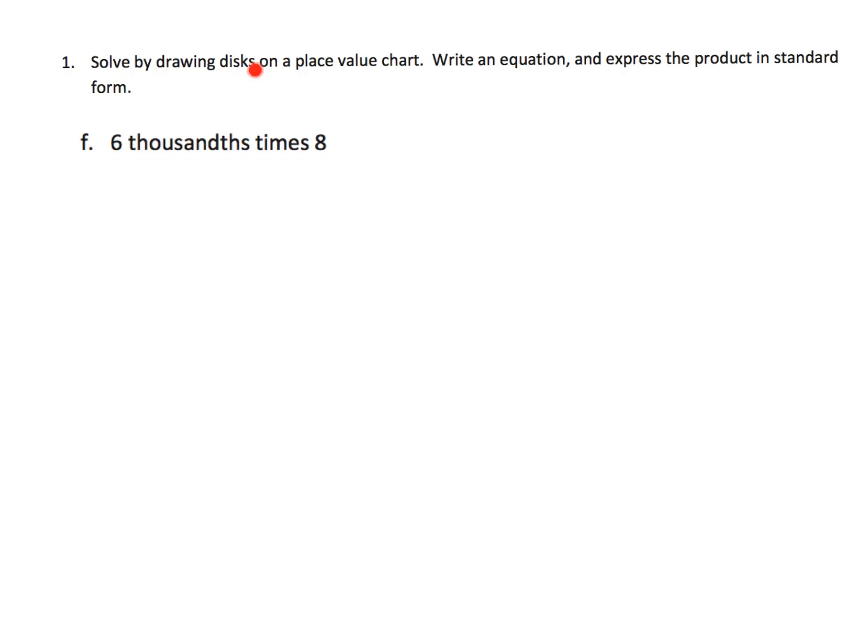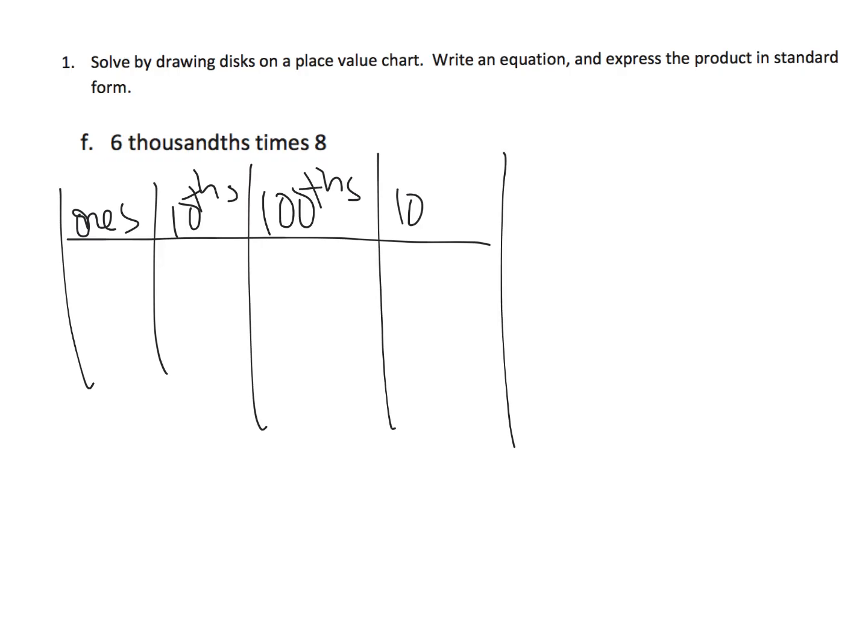Another example of that same kind of technique, they want us to demonstrate this in a place value chart. Now it says six thousandths eight times, times eight, right? So I need to make a place value chart, and I'll do ones, tenths, hundredths, and here's our thousandths. And it says we need to draw six thousandths eight times. So the math problem is going to look like this. Six thousandths multiplied by eight.